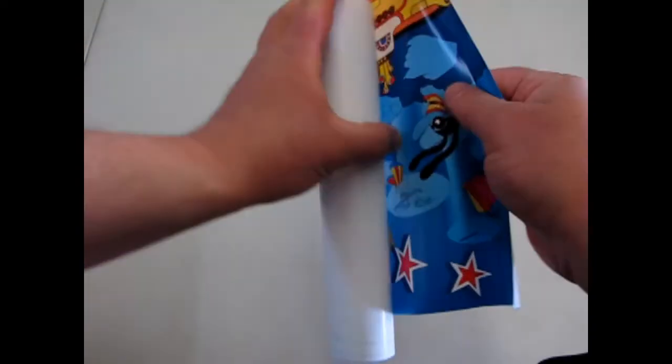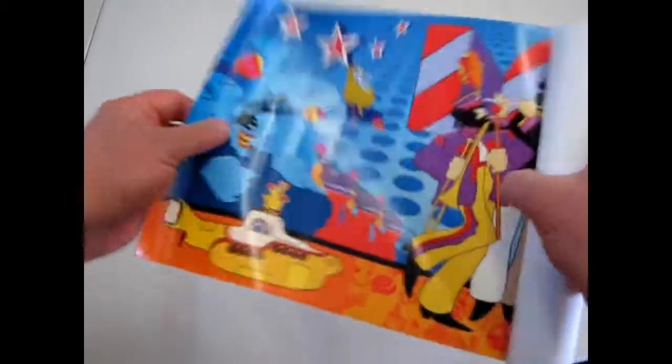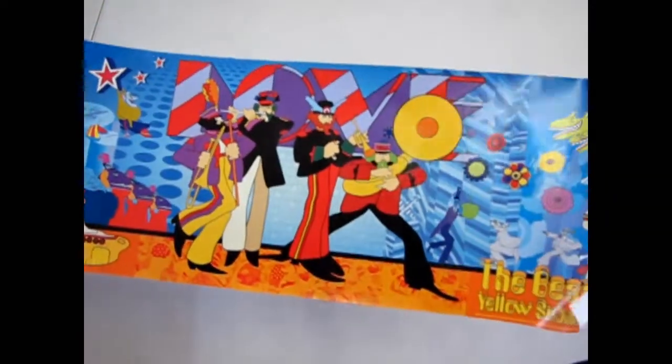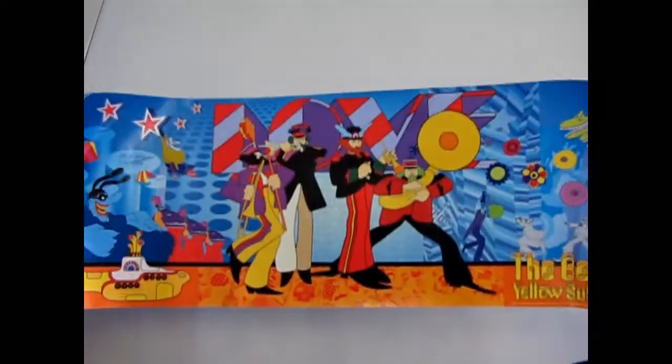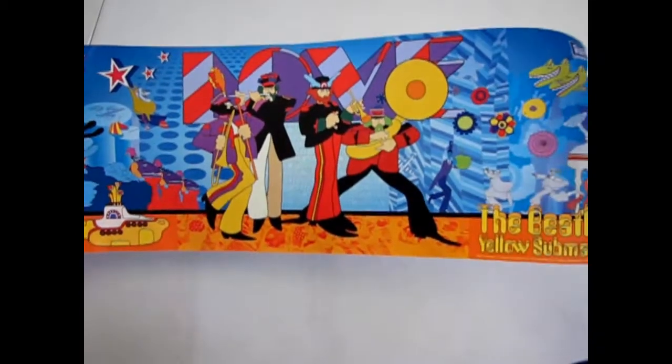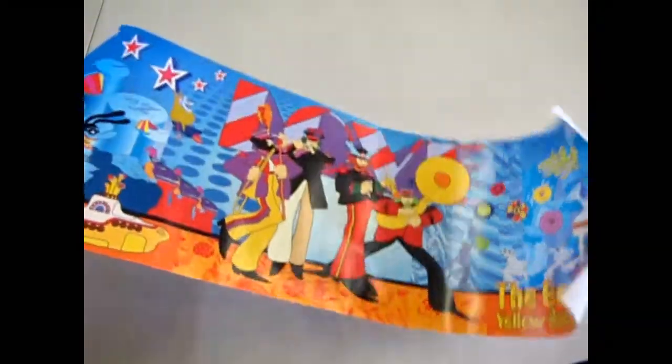As a bonus feature for the price of the tin box, you get this great Beatles Yellow Submarine poster. It's pretty long. You can have it framed if you like. I had a few of mine framed from other model kits.